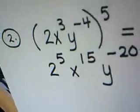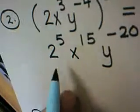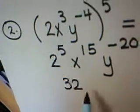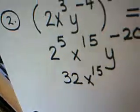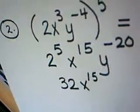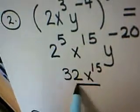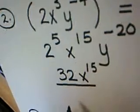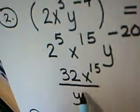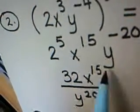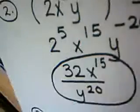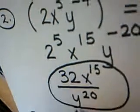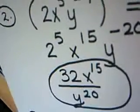Come with me to the paper. 2 to the fifth is actually 32, x to the 15th. And what happens is y to the negative 20th is going to drop down—we're taking the reciprocal of it. It will drop down to the denominator and become y to the positive 20th power. So my final answer is 32x to the 15th divided by y to the 20th. And we're done.